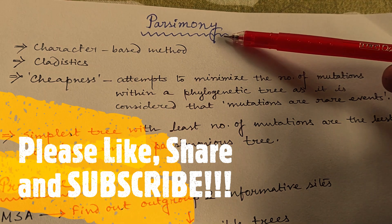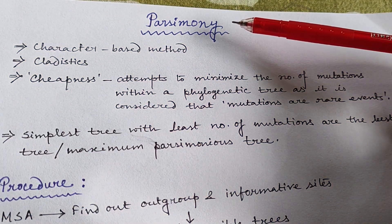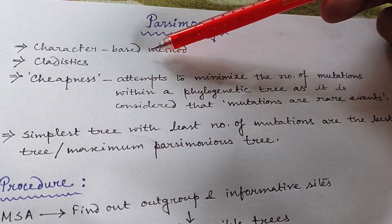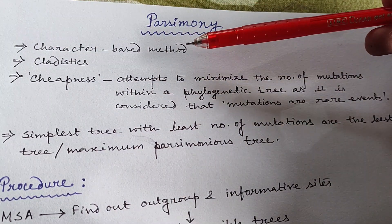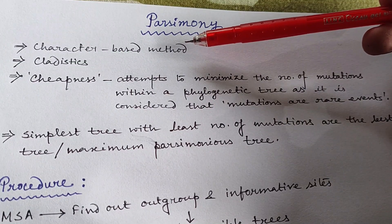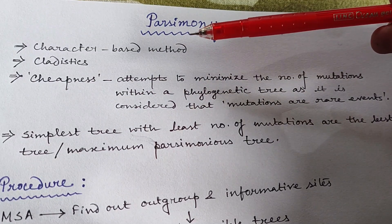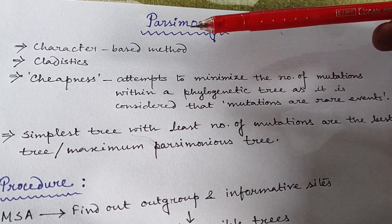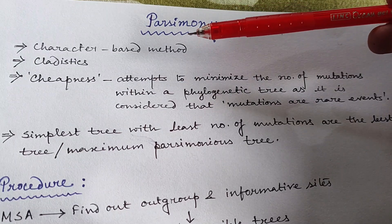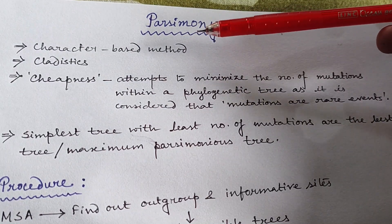Before beginning parsimony, we must learn about the three C's of parsimony. The first C is character-based method. This is a method of phylogenetic tree reconstruction where we give emphasis on each character of any sequence. We don't give emphasis on measuring distance between a pair of sequences — we give importance to each character of any sequence.